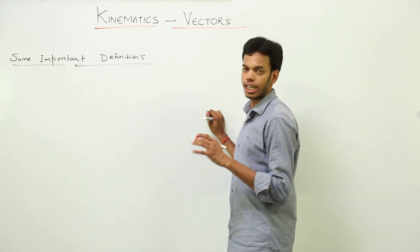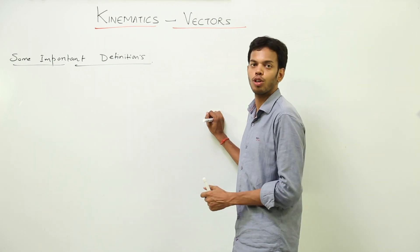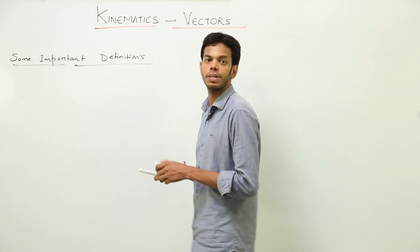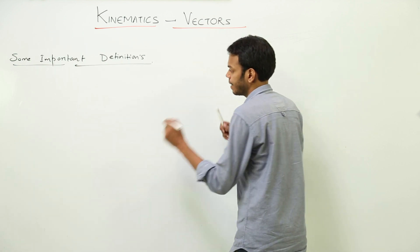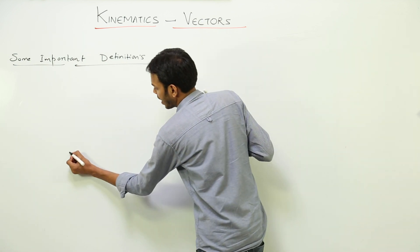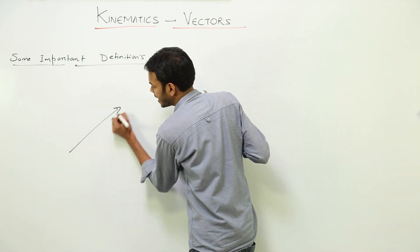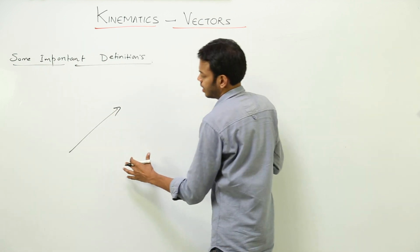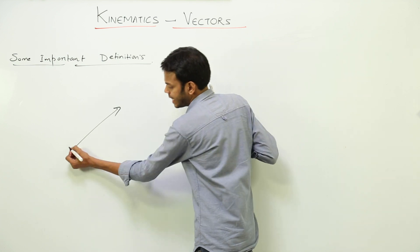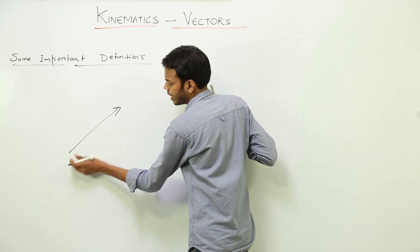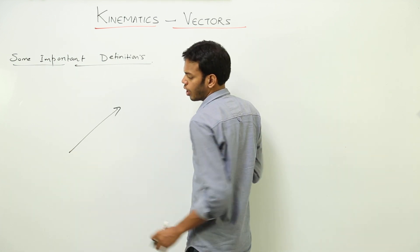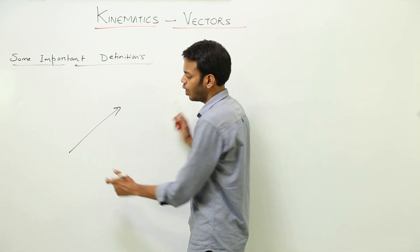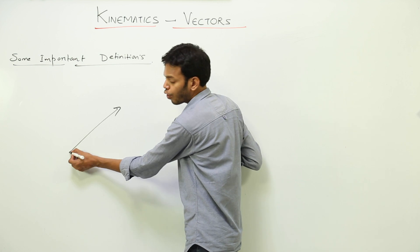Before starting some important definitions related to vectors, let's see how we represent a vector. A vector is represented by an arrow. The tail, or the point of origin, is the starting end of the arrow.